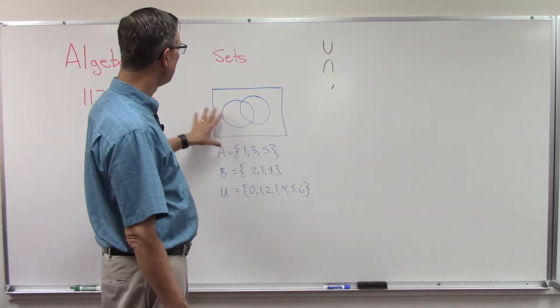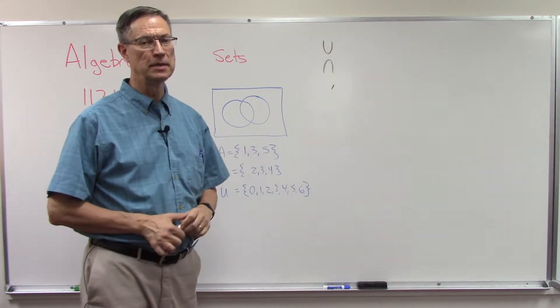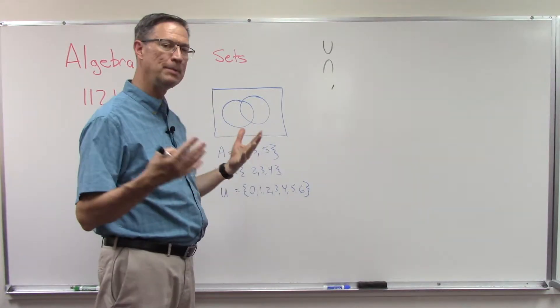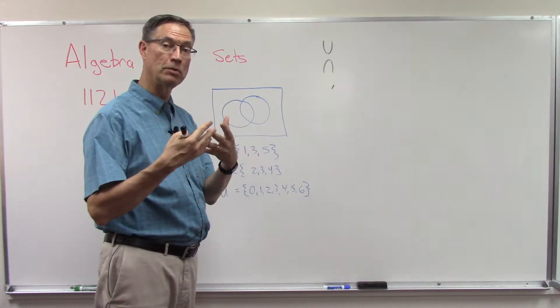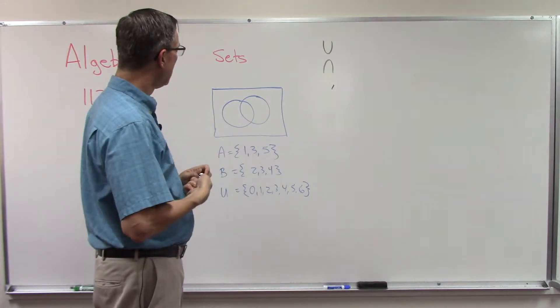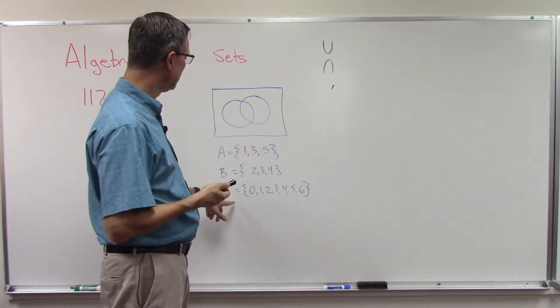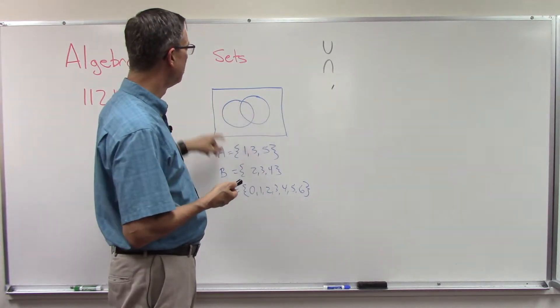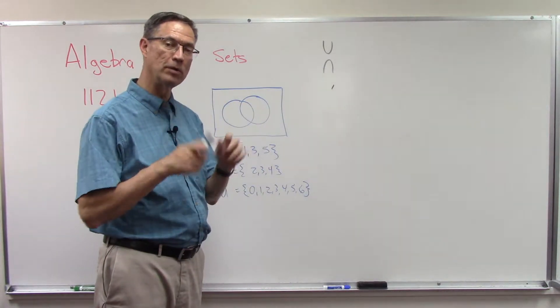And then this is called a Venn diagram and we use a Venn diagram to show how maybe two sets overlap, in other words they share some numbers in between them, and there might be some numbers that are not in either of these sets and that would be inside the box but outside the value of those two sets.